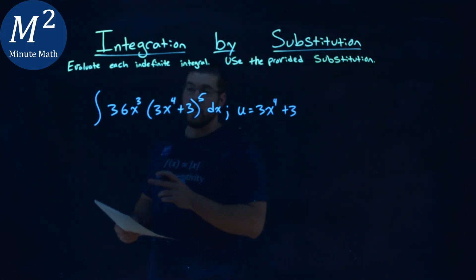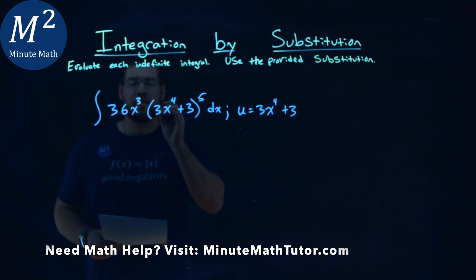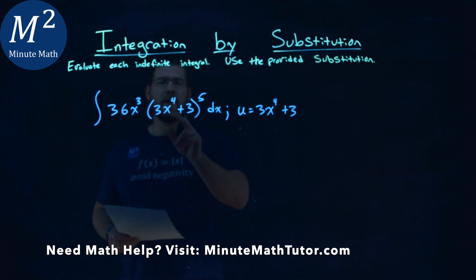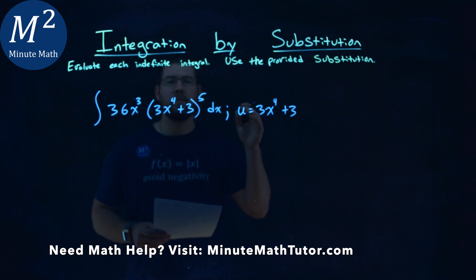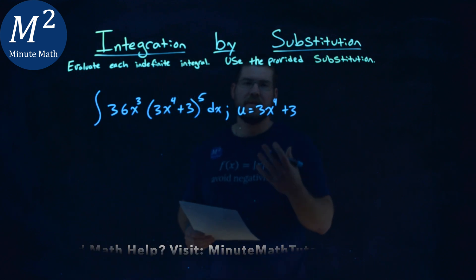We're given this problem right here, the integral of 36x to the 3rd power times 3x to the 4th plus 3 to the 5th power dx, and our u value is 3x to the 4th plus 3, and we have to evaluate this indefinite integral.